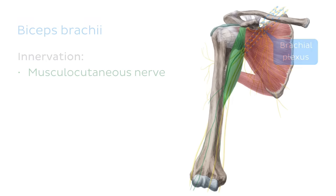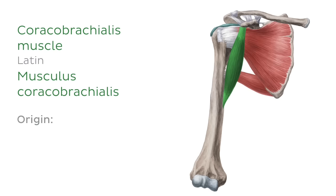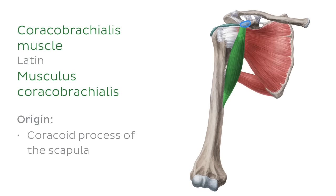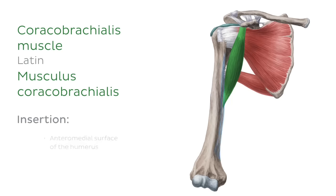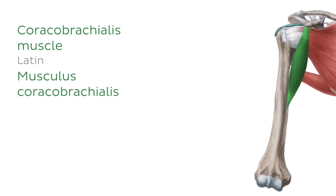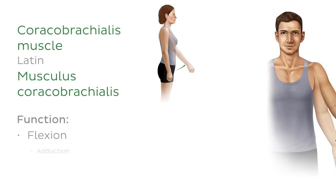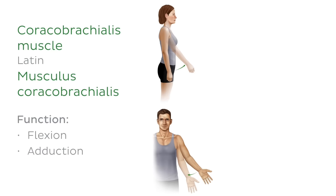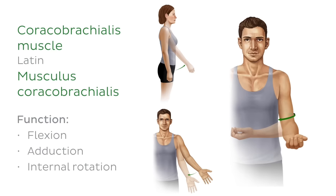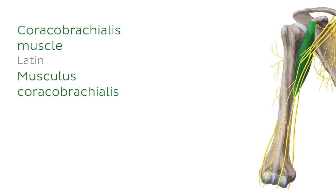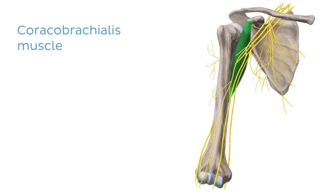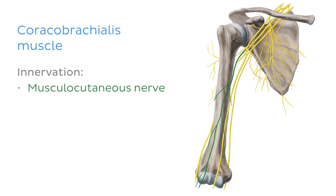If we remove the biceps brachii, we can see the coracobrachialis muscle highlighted in green. The coracobrachialis originates from the coracoid process of the scapula and extends distally to insert along the anteromedial surface of the humerus. This muscle assists in flexion and adduction of the arm at the shoulder joint, and also assists in internal rotation of the arm at the shoulder joint. Like the biceps brachii, the coracobrachialis is innervated by the musculocutaneous nerve.